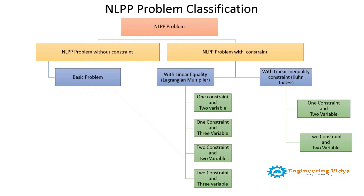If the constraint has an inequality sign, it can be solved with the help of the Kuhn-Tucker (KKT) method. The Lagrangian multiplier problem has four categorizations: one constraint two variable, one constraint three variable, two constraint three variable, and two constraint two variable. These are the four types of problems that come under the Lagrangian multiplier method.